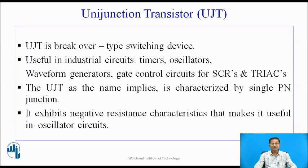UJT is a breakover-type switching device. It is useful in many industrial circuits like timers, oscillators, waveform generators, and gate control circuits for SCRs and triacs. The UJT, as the name implies, is characterized by a single PN junction. It exhibits negative resistance characteristics that makes it useful in oscillator circuits.